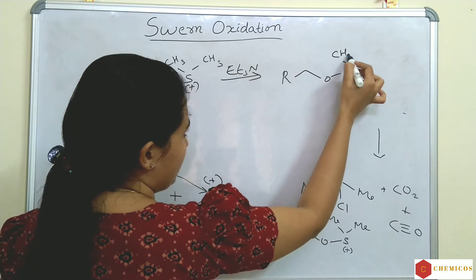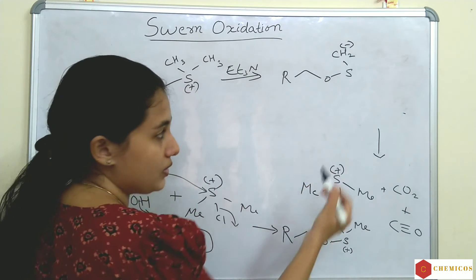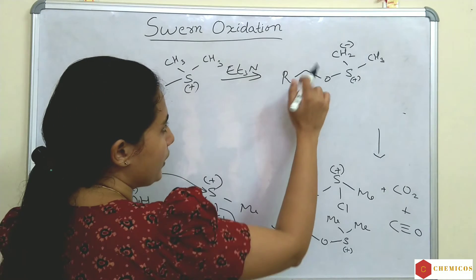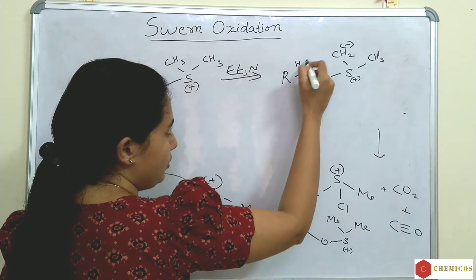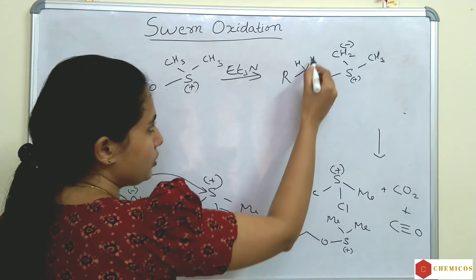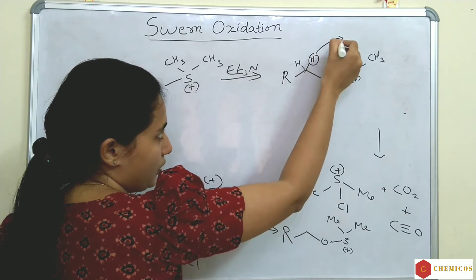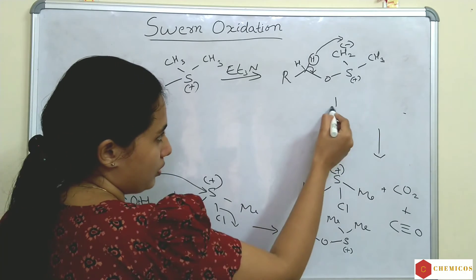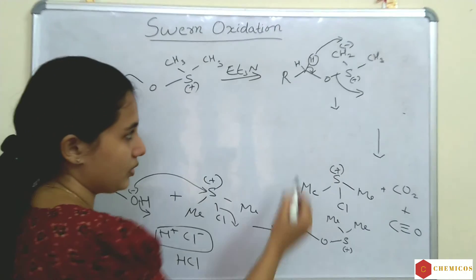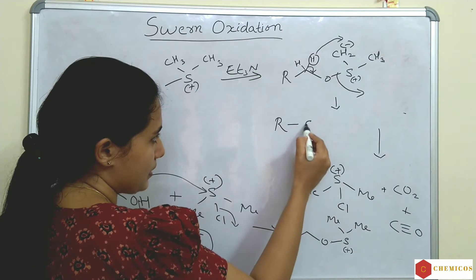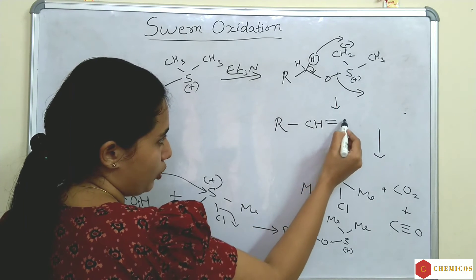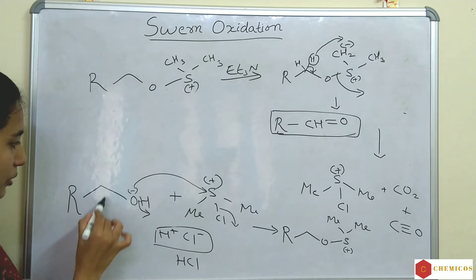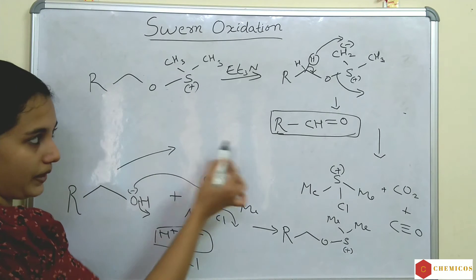So CH₃ becomes CH₂⁻. Here there are two hydrogens on the carbon bearing oxygen — RCH₂O. The base abstracts one hydrogen, the electrons shift into the bond, and that bond is eliminated. The result is RCHO — an aldehyde. So a primary alcohol is oxidized to an aldehyde.